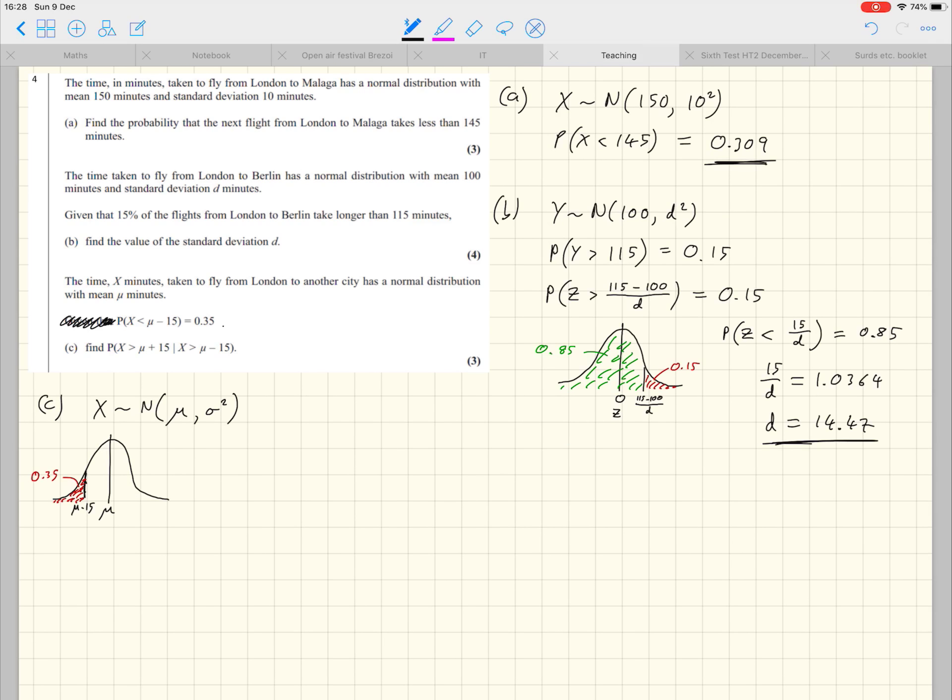We need to do what we did in an earlier question and think carefully about this. Probability that X is greater than mu plus 15, given that X is greater than mu minus 15. If we use the formula, I'll write it over here out of the way. Probability of A given B is equal to the probability of A intersection B divided by probability of B. We're going to use that formula by first defining what A is. A is the statement that X is greater than mu plus 15, and B is the statement that X is greater than mu minus 15.